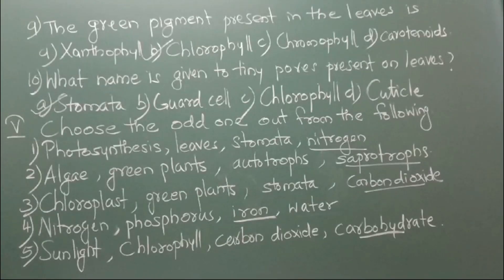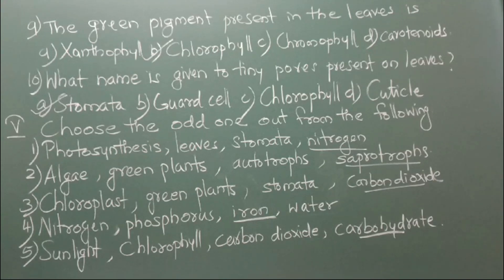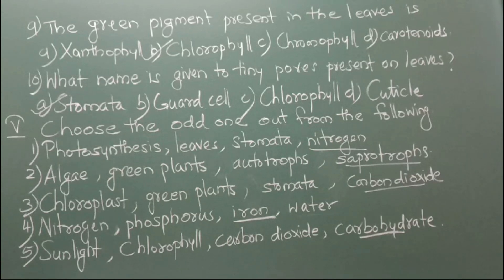Number 9: The green pigment present in the leaves is A. Xanthophyll, B. Chlorophyll, C. Chromophyll, D. Carotenoids. The correct answer is option B, chlorophyll. Number 10: What name is given to tiny pores present on leaves? A. Stomata, B. Guard cell, C. Chlorophyll, D. Cuticle. The correct answer is option A, stomata.